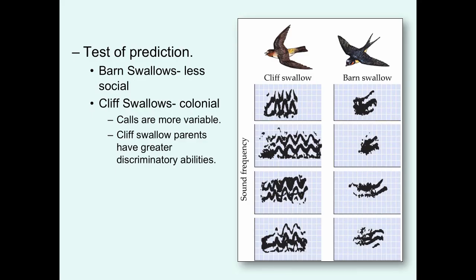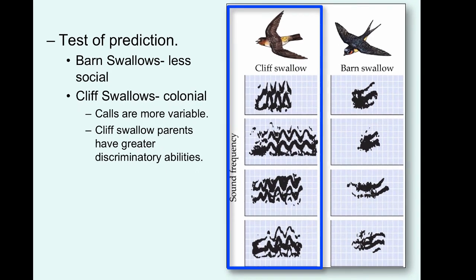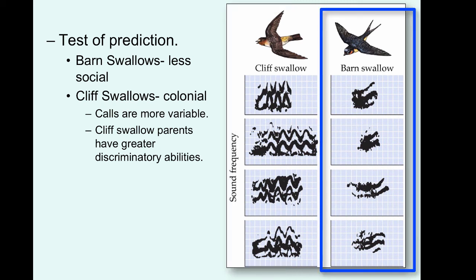Here's another test of the prediction comparing barn swallows and cliff swallows. Barn swallows are less social, while cliff swallows exist in large colonies. If you look at vocalizations, cliff swallows have much more complex vocalizations with greater variation across family groups. These calls are much more variable, and this allows cliff swallows to have better discriminatory abilities. You do not see the same thing in barn swallows to the same degree.